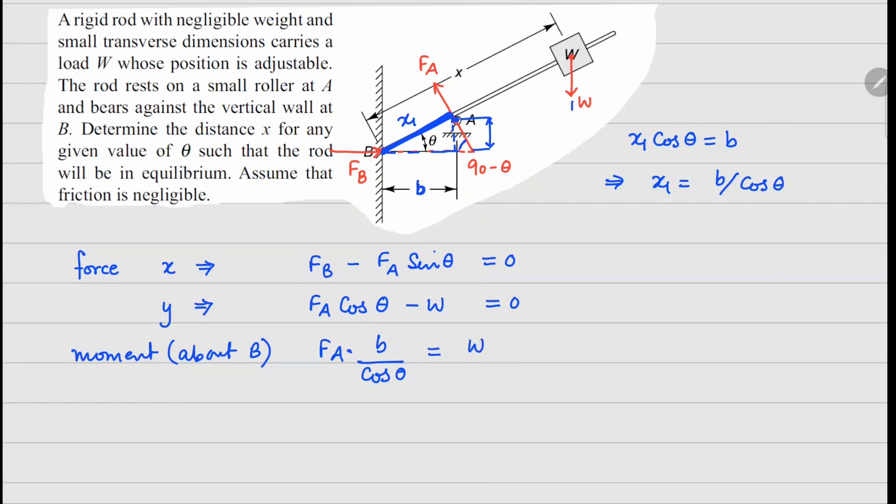times this distance from here to here, which is x cos theta. In this equation we can substitute the value of FA from the second equation, which is W divided by cos theta times B divided by cos theta equals W x cos theta.